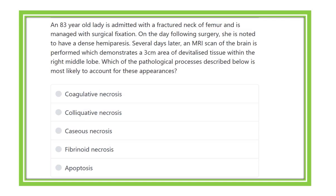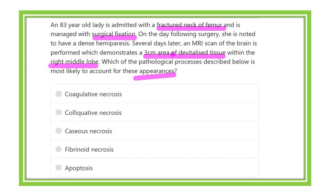An 83-year-old lady is admitted with a fracture neck of the femur and is managed with surgical fixation. Following surgery, she is noted to have dense hemiparesis. Several days later, an MRI scan of the brain is performed and reveals a three-centimeter area of devitalized tissue within the right middle lobe. Which pathological process is most likely to have this appearance?